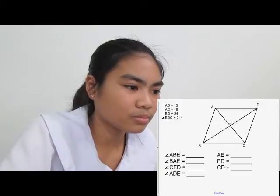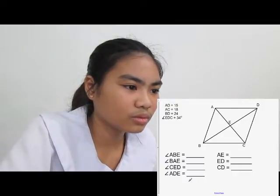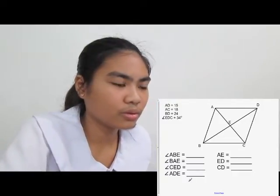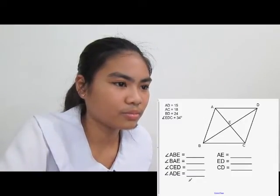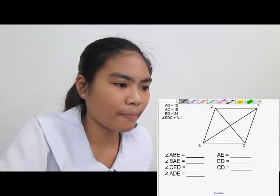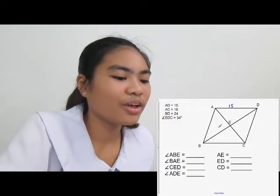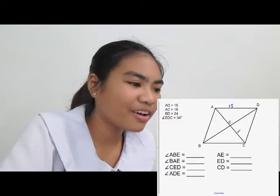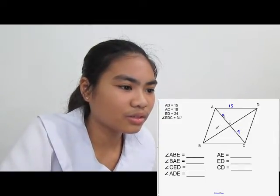Let's apply what we've learned and do a problem. I'd recommend you pause the video, draw this out, and try it on your own. AD is 15, AC is 18 — and since the diagonals are bisected, half of 18 is 9, giving us 9 and 9. BD is 24, so each half is 12.